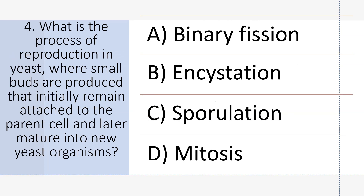What is the process of reproduction in yeast, where small buds are produced that initially remain attached to the parent cell and later mature into new yeast organisms? Answer B: Budding.